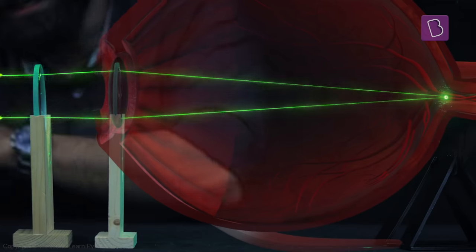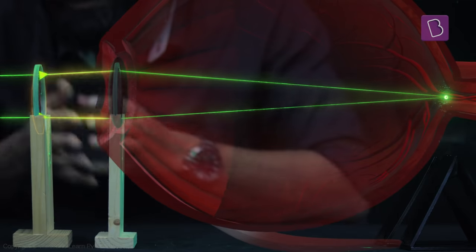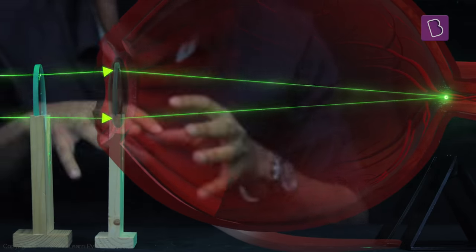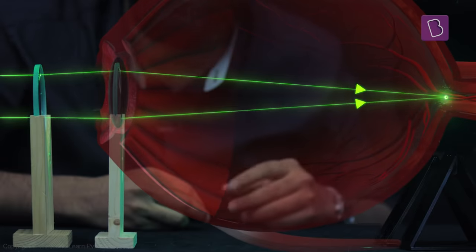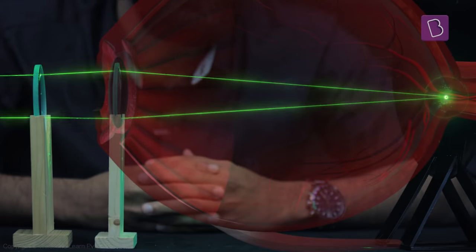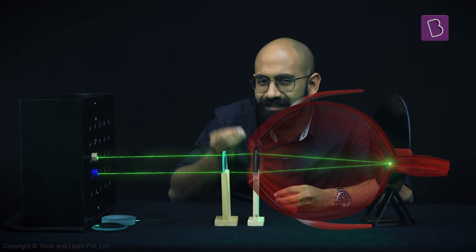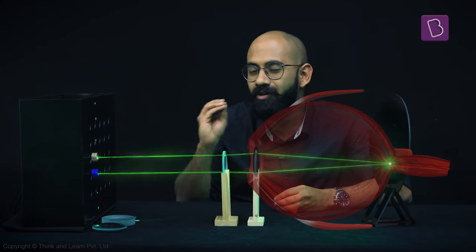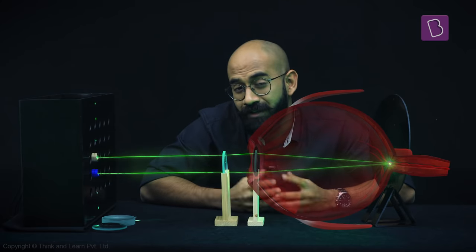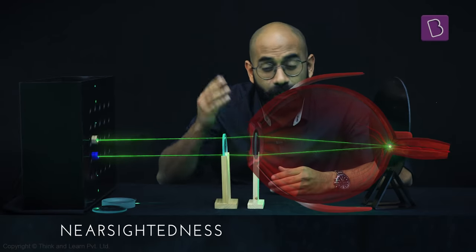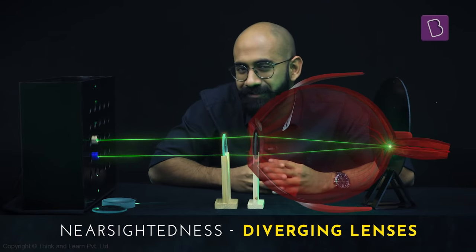This is because the incoming rays are first diverged by the corrective lens, and then the eye lens can further converge those rays onto the retina. So now, this person can see a clear image of those far off objects. So this is why a person with nearsightedness requires spectacles with diverging lenses.